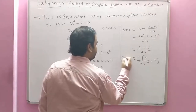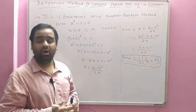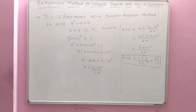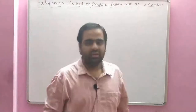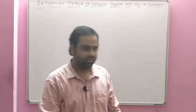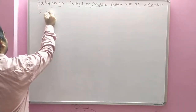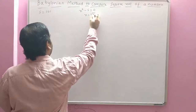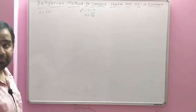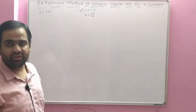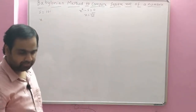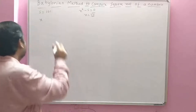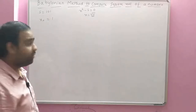Let us compute the square root of 101 using this method. Let s = 101 since we need the square root of s (from x² − s = 0). For the initial value of x, you can assume any positive number; if it is closer to s it converges faster, but any positive value works. Let x₀ = 1.